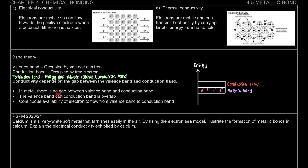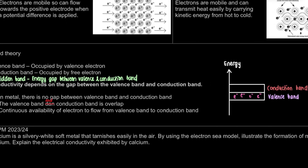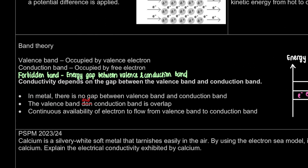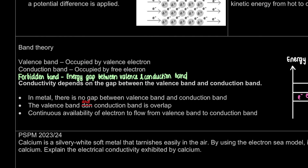Right now what we're going to learn is to explain the electrical conductivity using band theory. For band theory, the terms that are important for you to know are: the valence band, which is occupied by the valence electron, and the conduction band, which is occupied by the free electron. So why do we mention free electrons?